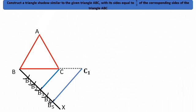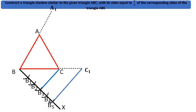Extend ABC. Draw a line through C1 parallel to CA to intersect AB at A1. So, triangle A1, B, C1 is the required triangle.